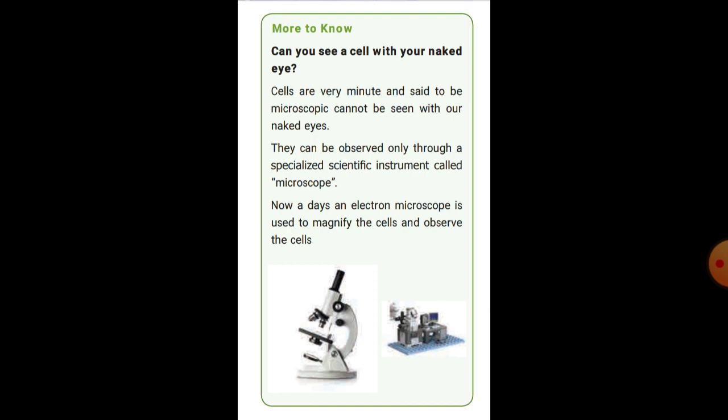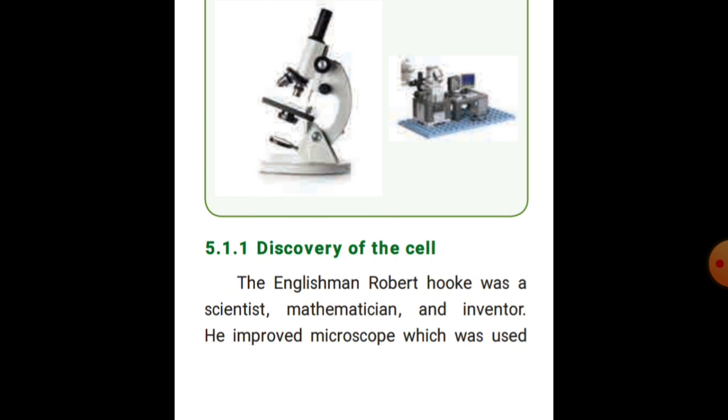Cells can be observed only through the specialized scientific instrument called a microscope. The microscope is used to magnify and observe the cells. An electron microscope is used to view cells in greater detail. Here is a picture of an electron microscope and a picture of a cell.